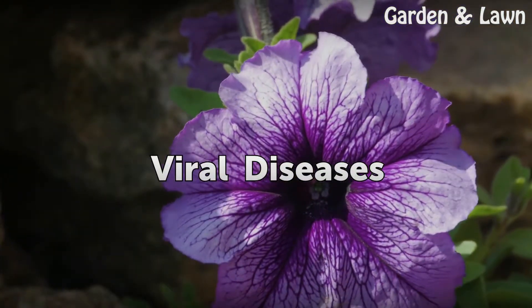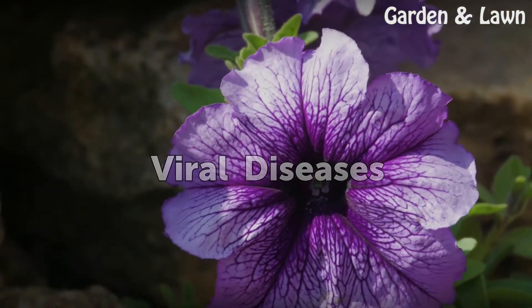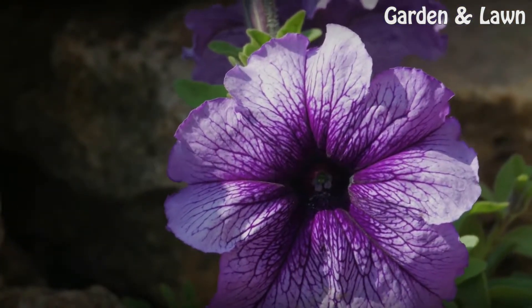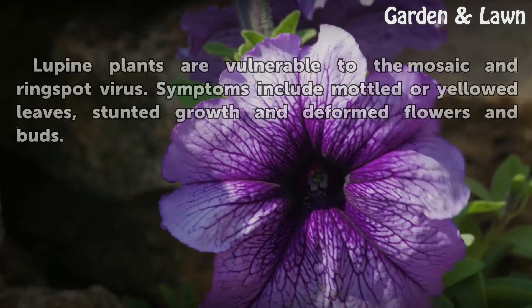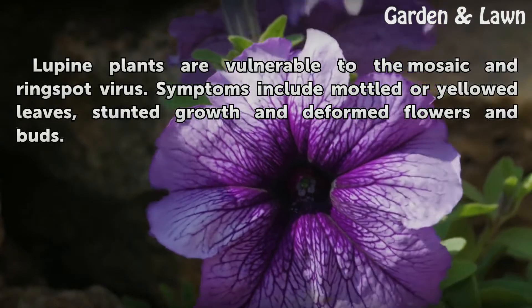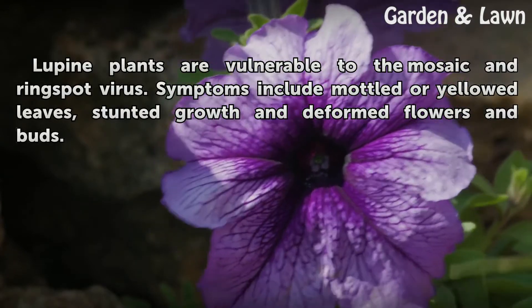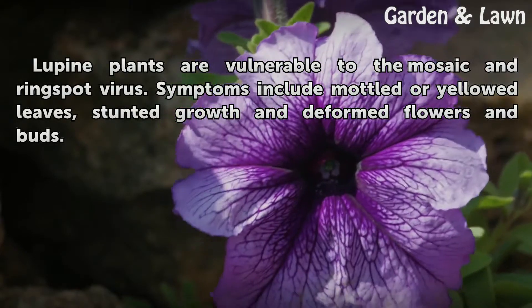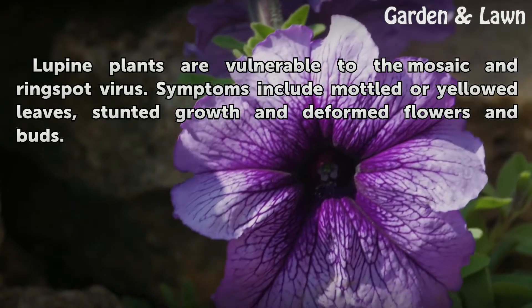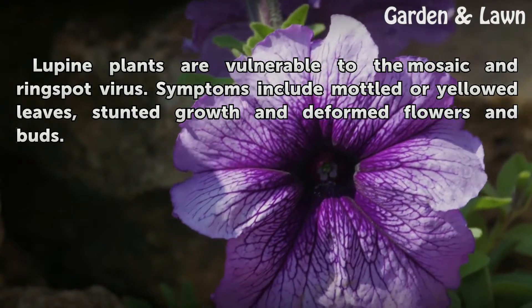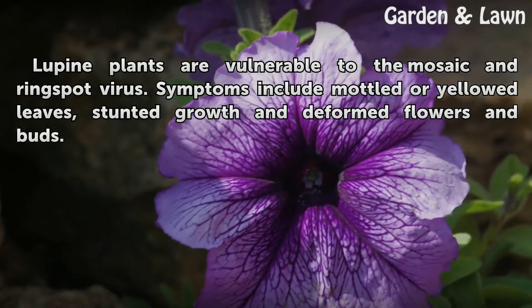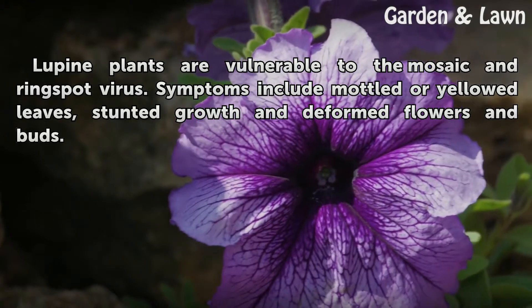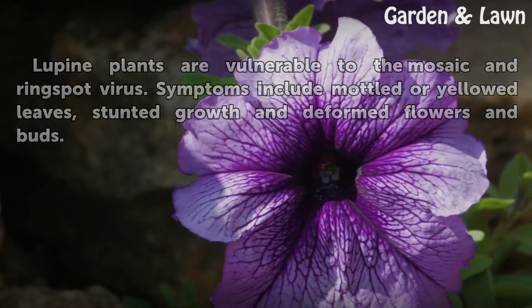Viral Diseases. Lupine plants are vulnerable to the mosaic and ring-spot virus. Symptoms include mottled or yellowed leaves, stunted growth, and deformed flowers and buds.